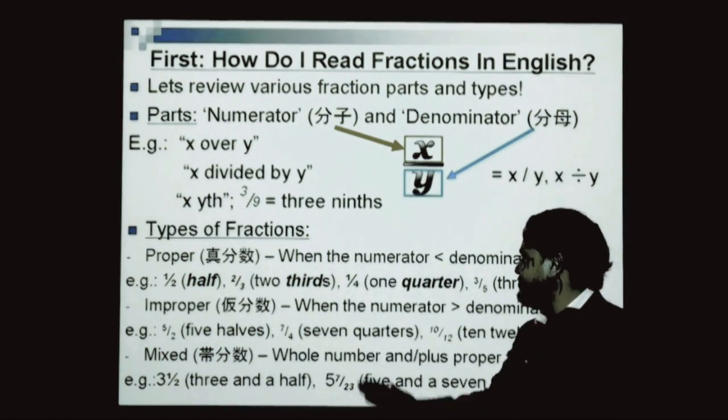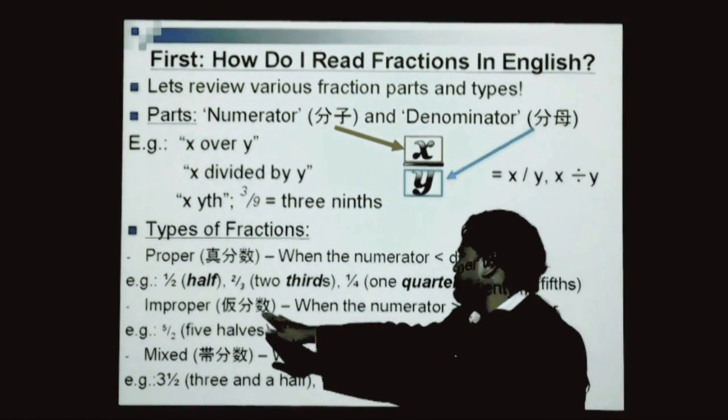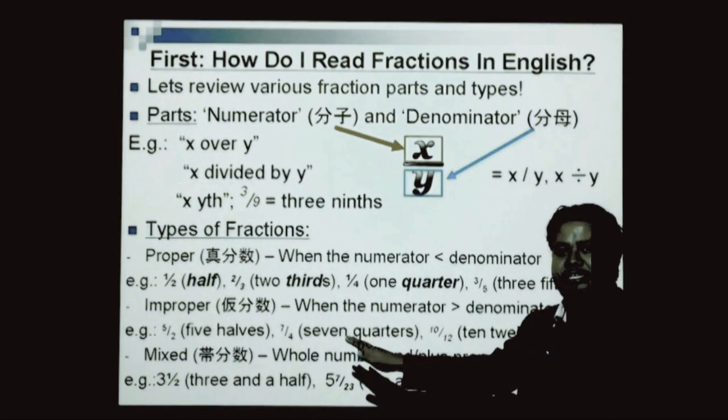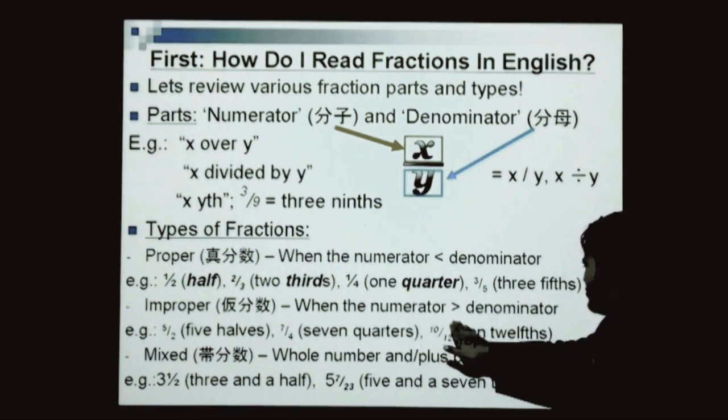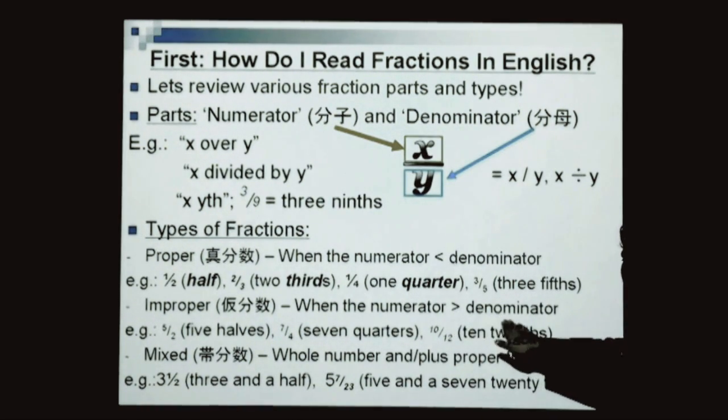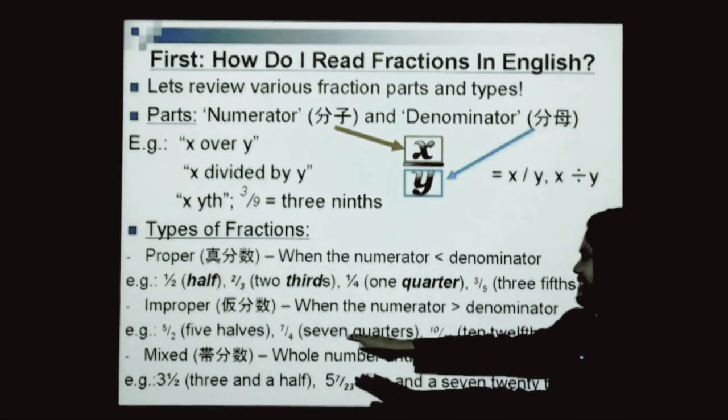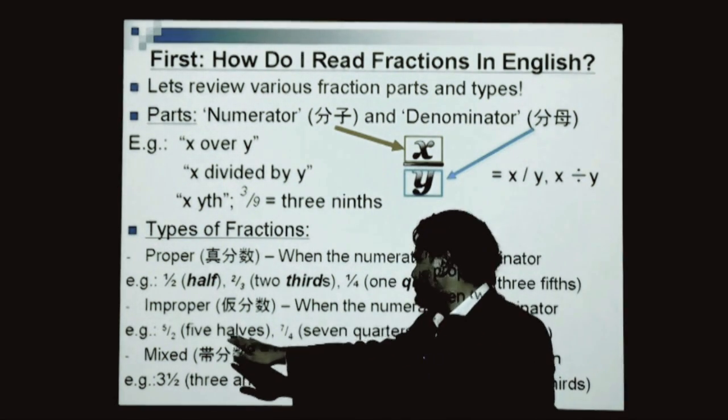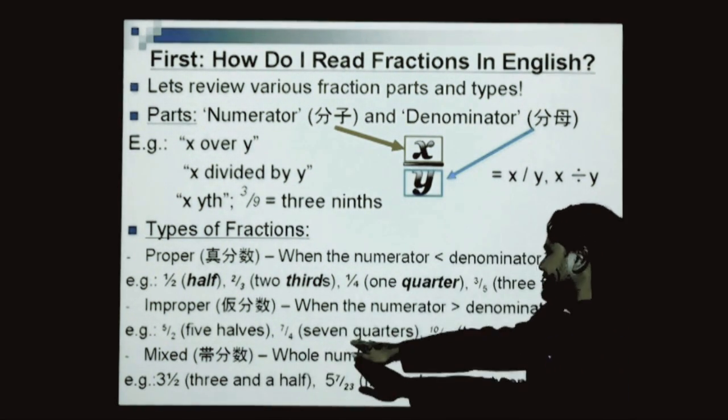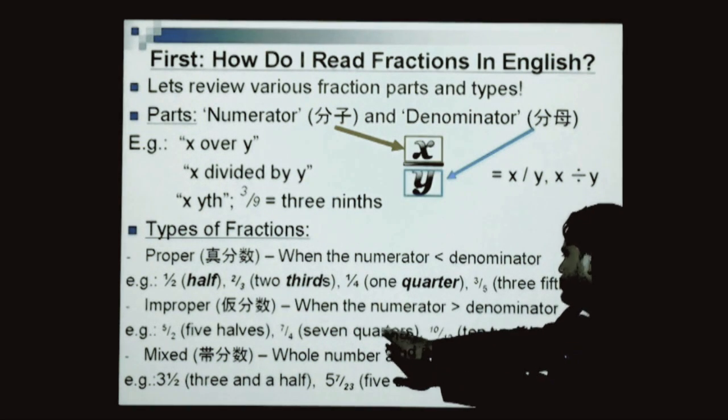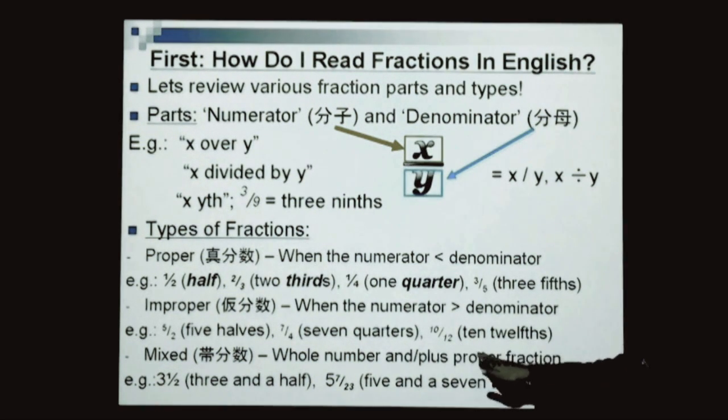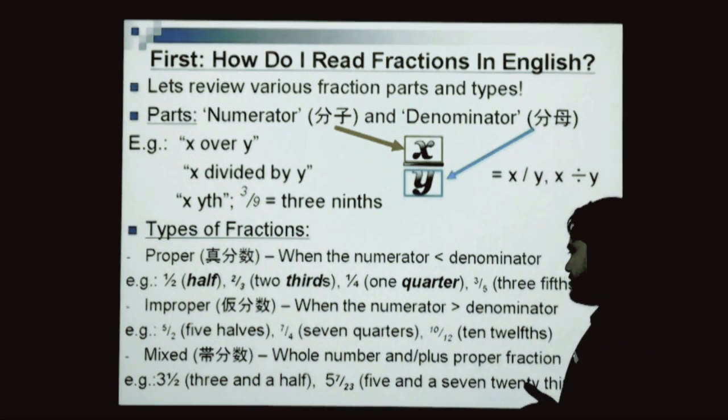And the second type of fraction, we have improper fractions. This is simply when the numerator is greater than the denominator. Examples: 5 over 2, or 5 halves; 7 over 4, or 7 quarters; and 10 over 12, another way, 10 twelfths. You'll become more familiar with this as we move along.